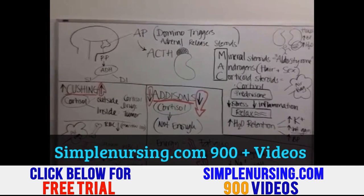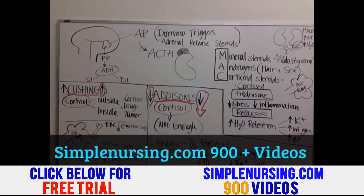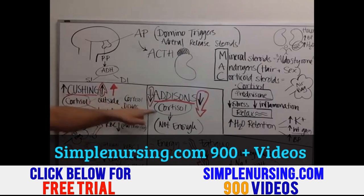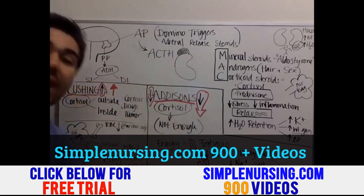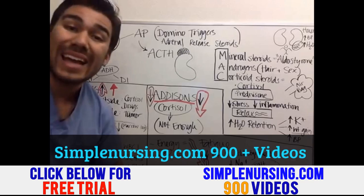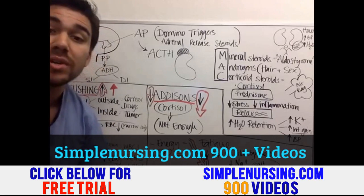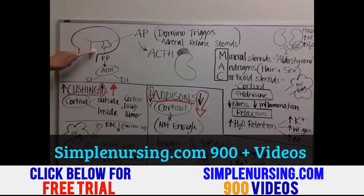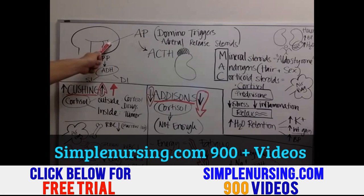Addison's disease is not having enough cortisol. I can explain exactly how the body produces cortisol and where it comes from. It all really starts — all hormone regulation really starts — in your pituitary. You have an anterior pituitary and a posterior pituitary.